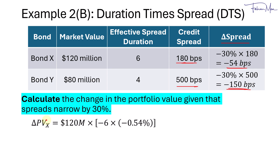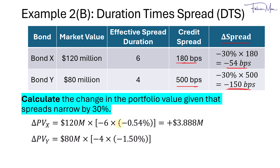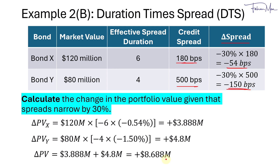We then calculate the change in present value for each bond. For Bond X: $120 million × (–6) × (–0.54%) = positive $3.888 million. For Bond Y: $80 million × (–4) × (–1.5%) = positive $4.8 million. Totaling these gives $8.688 million, which matches what we computed earlier using the DTS.